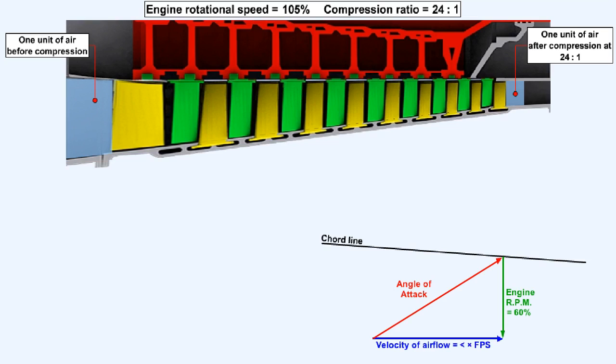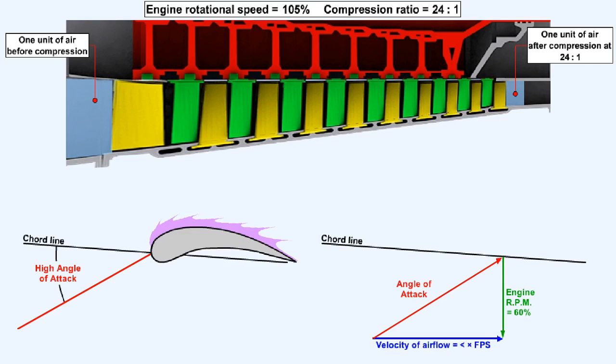To get through the compressor in the same amount of time it took when it was compressed at a 22 to 1 ratio, the decreased volume of air will be moving slower. Once again, the changed relationship between the airflow axial velocity and the RPM will change the angle of attack.